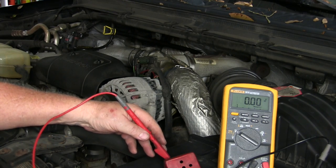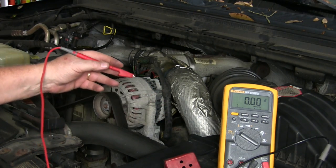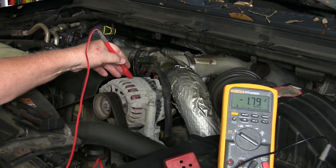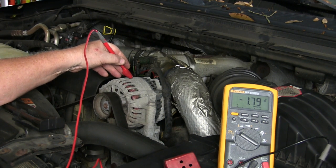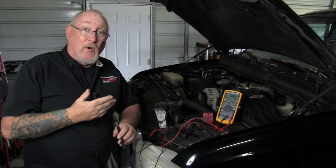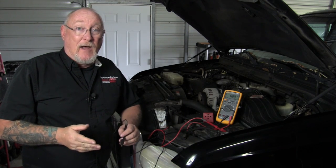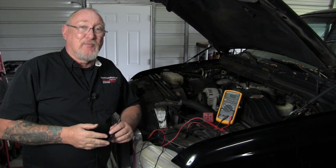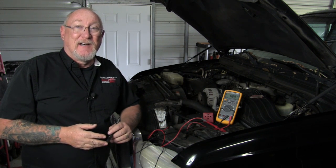But the confusion starts when we move our positive lead to a ground. We don't expect to see voltage there, do we? How can you be measuring voltage when both of your meter leads are attached to a ground point? I'll explain that in today's edition of the trainer.